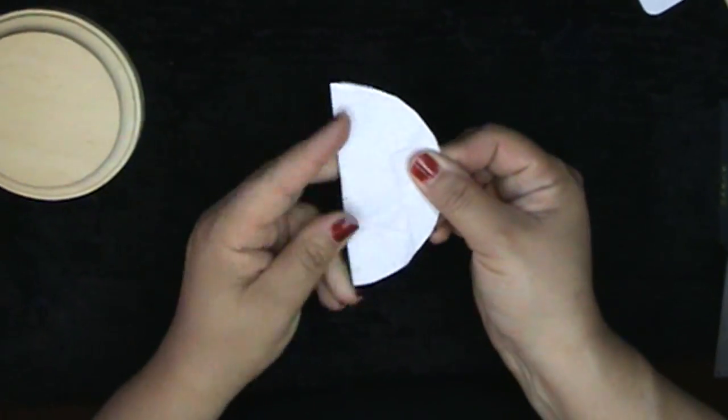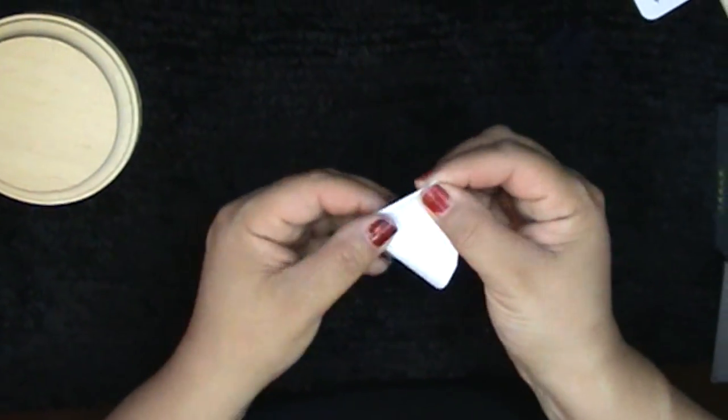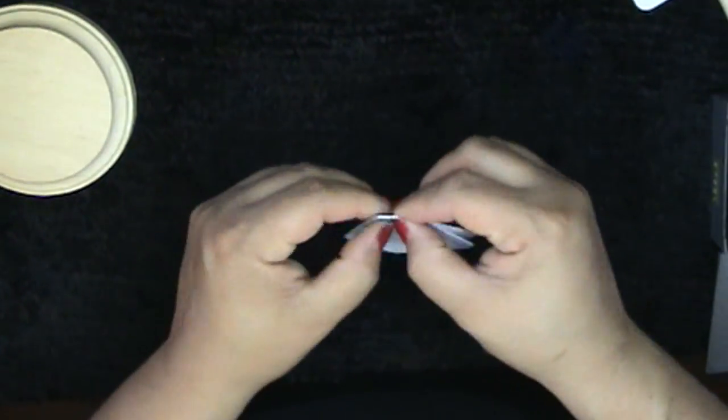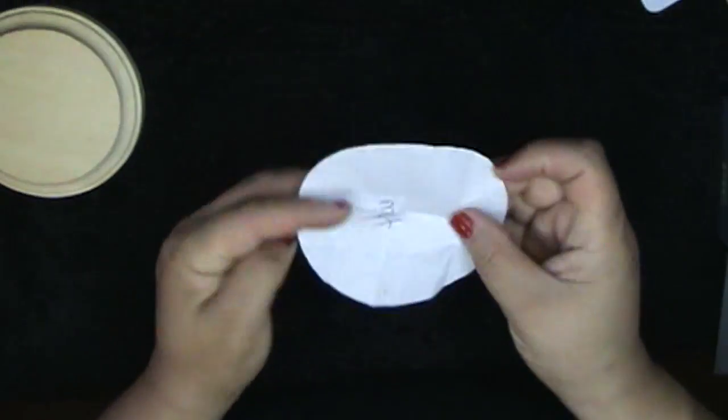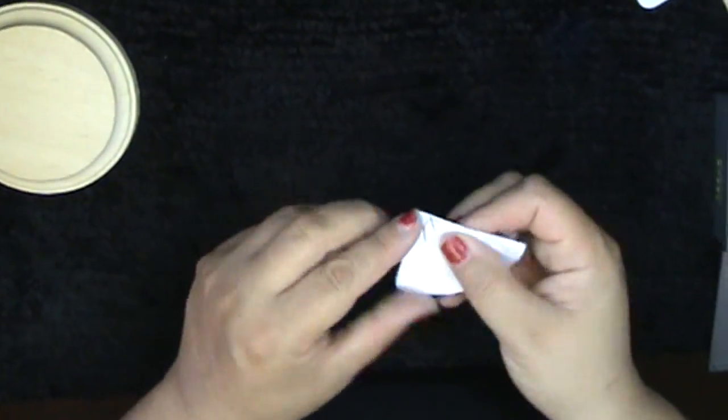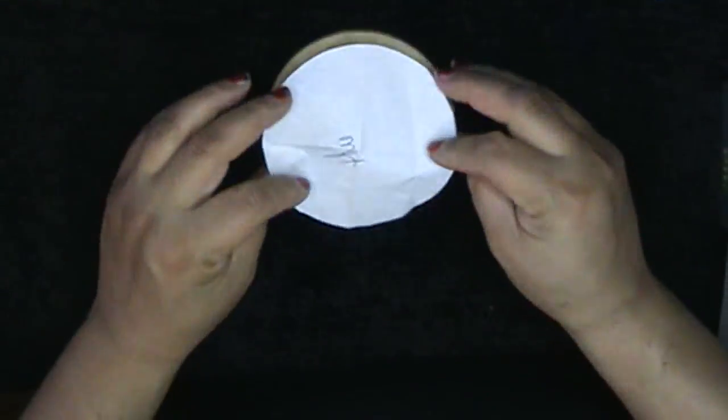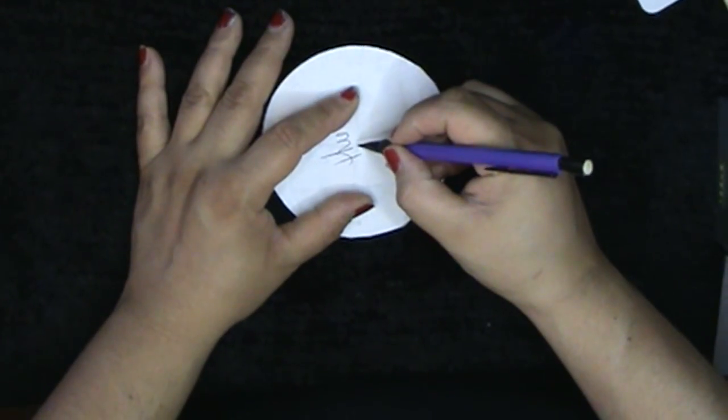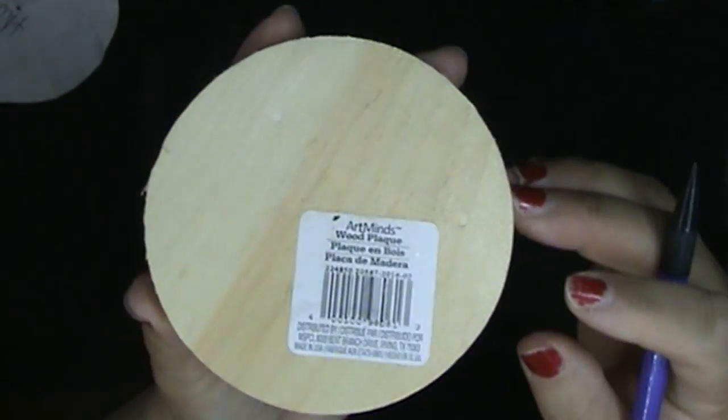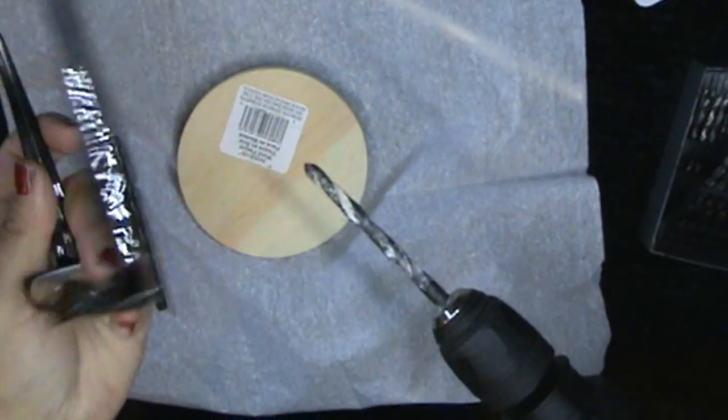So fold your paper in half and then in half again, and that middle section right there, that's the exact center of the circular wooden piece. So mark it with a pencil or a marker. Just make sure you mark it thoroughly because then you can't see it. Always use protective eyewear, and now it's time to drill the little hole.